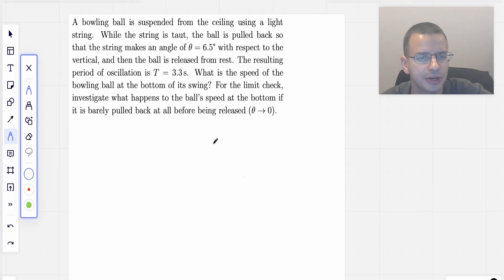A bowling ball is suspended from the ceiling using a light string, i.e. massless. The string is taut, doesn't stretch. The ball is pulled back so that the string makes an angle of 6.5 degrees with respect to the vertical and then the ball is released from rest, i.e. no kinetic energy to start with. The resulting period of oscillation is 3.3 seconds.